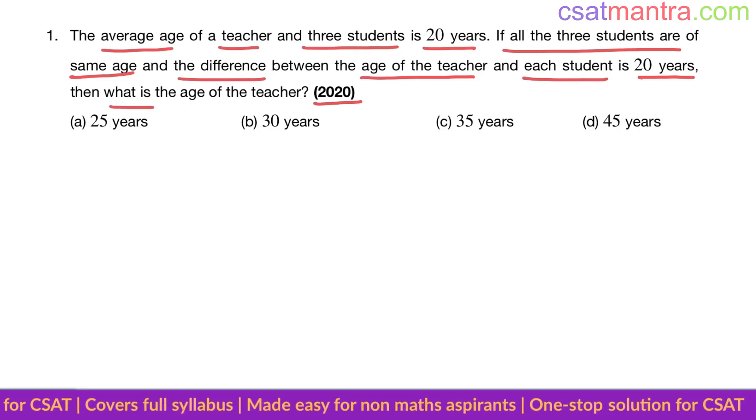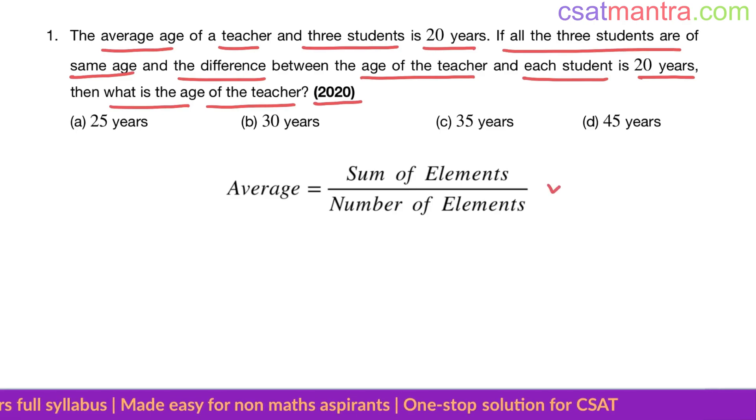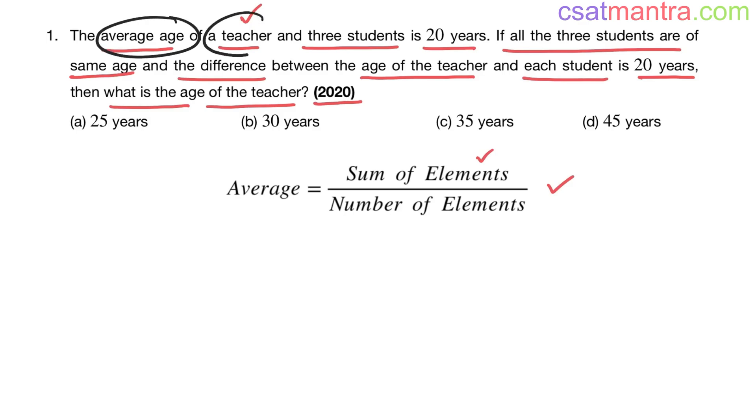This is the only formula which we have in this chapter. Once you map this question to the averages chapter, all you have to do is apply this formula. Here the elements are ages of a teacher and students. It is given that average age of a teacher and the three students is 20 years.